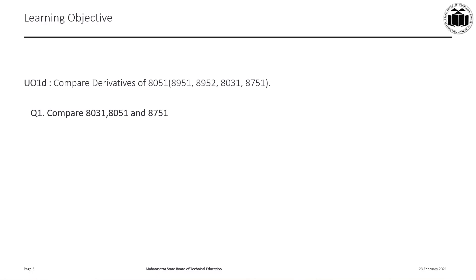The learning objective or the learning outcome of this session will be to compare derivatives of 8051 such as the 8951, 8952, 8031 and 8751. By the end of this session, you should be able to compare the different derivatives of 8051 like 8031, 8051 and 8751.